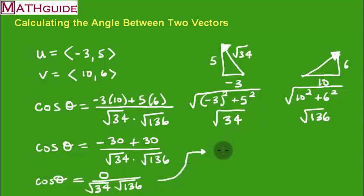So continuing on, I get the cosine of some angle is equal to zero. Now you think, the cosine of what angle is equal to zero? Well, the cosine of 90 degrees is equal to zero. And there you go.